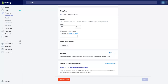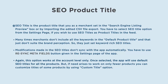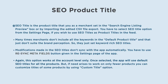SEO product title is the product title that you as a merchant set in the search engine listing preview box, or by importing the edited CSV file export. You will have to select the SEO title option from the settings page if you wish to use SEO titles as product titles in the feed. Many times merchants don't include all the keywords in the default product title, as that doesn't suit their brand perception, so they set keyword-rich SEO titles.